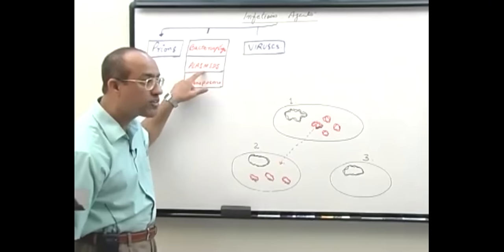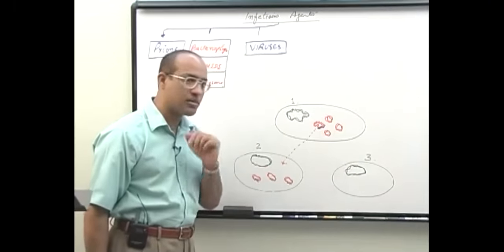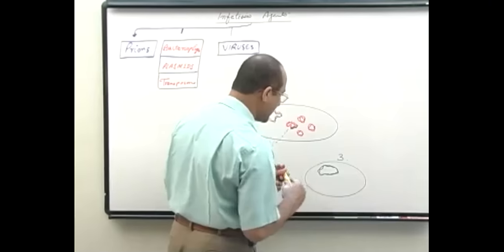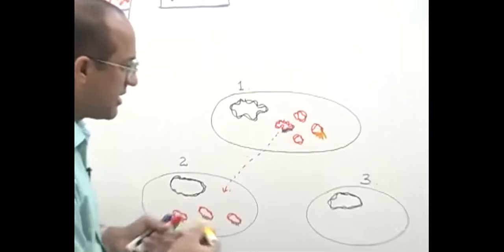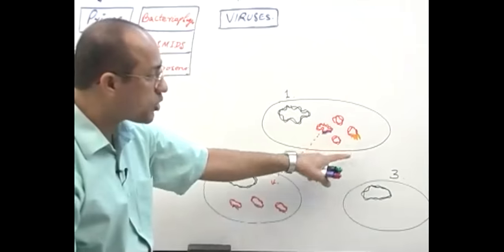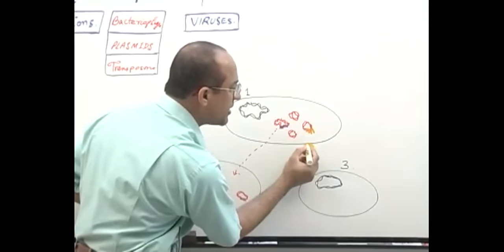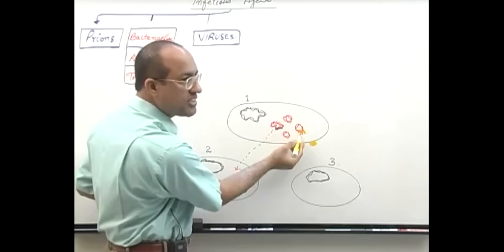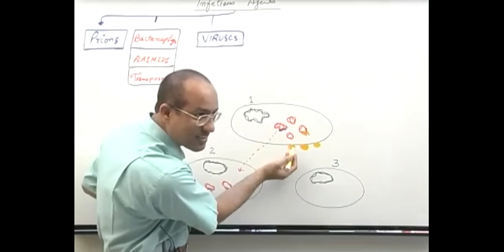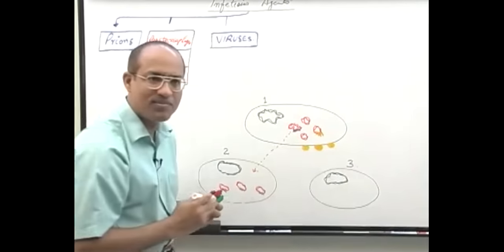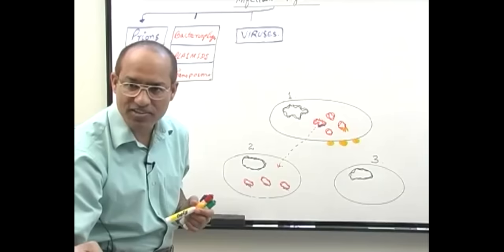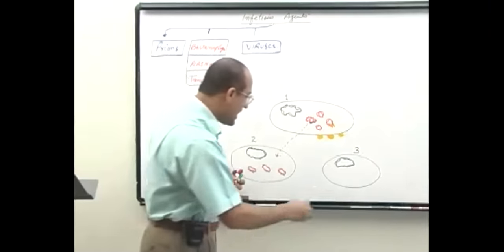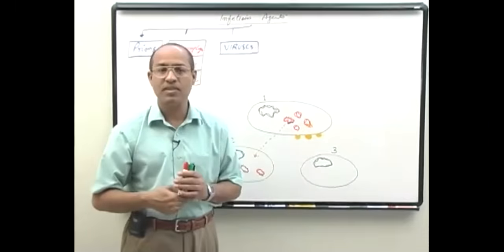Plasmids can alter the virulence of bacteria. Some plasmids carry genes that produce adhesins — proteins that help bacteria stick to our mucosal cells. If the plasmid is absent, bacteria are not adherent and cannot produce disease. With the plasmid, they become capable of causing disease. Plasmids are thus related to pathogenicity, either by producing toxins or adhesins.